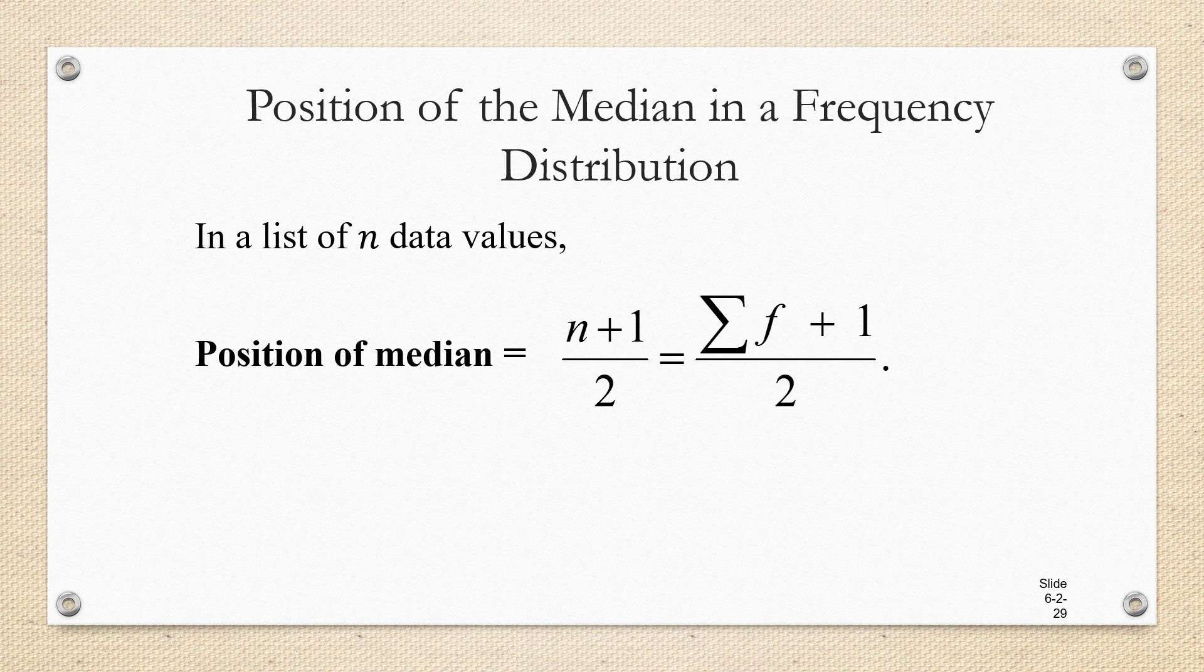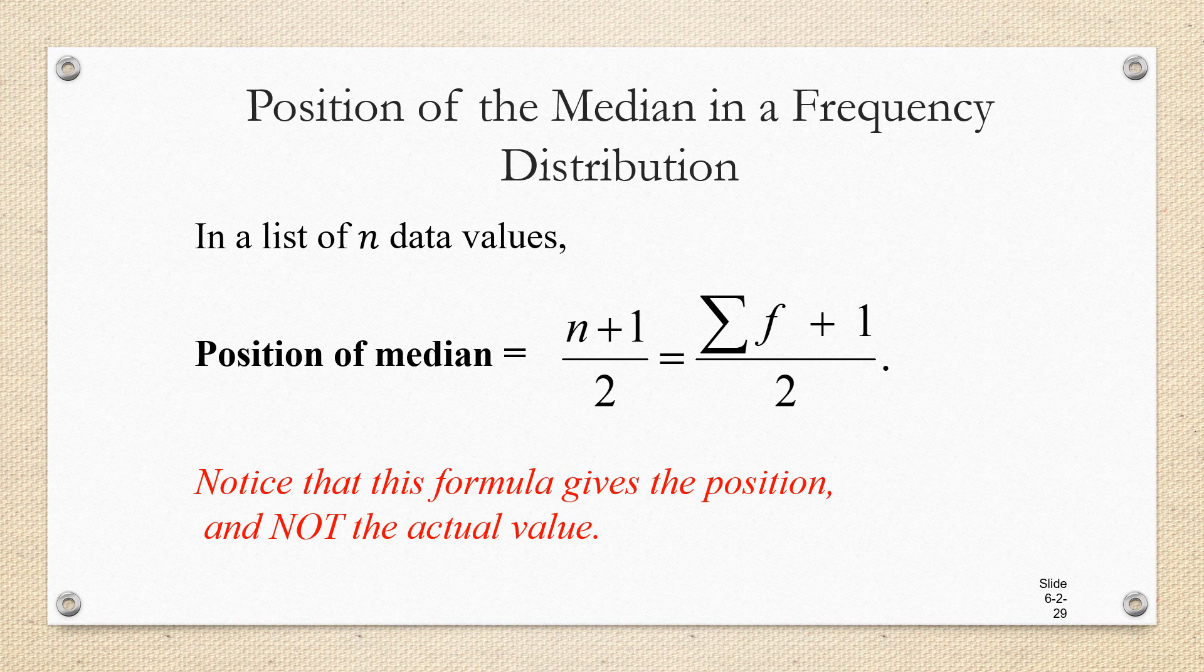It might be you have to figure it out by adding up the frequencies, and that's what sigma f means. So if you're given n, just add n plus 1 over 2. And if you're given the frequencies of the data items, add those up to find n, and then add 1 and divide by 2. Notice that this is not a formula for the median. This only gives us the position of the median, and we still have to go find the median in the data set.